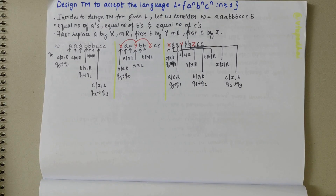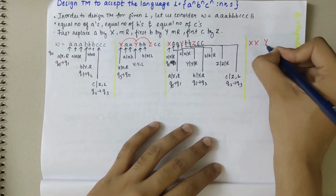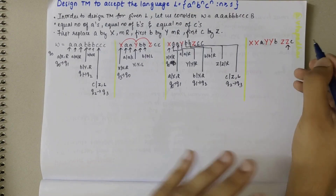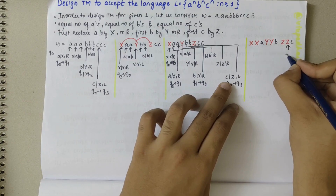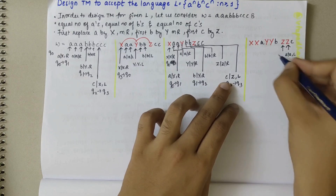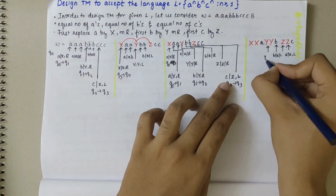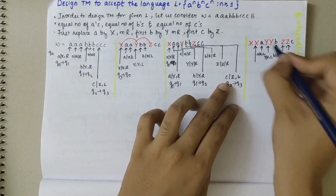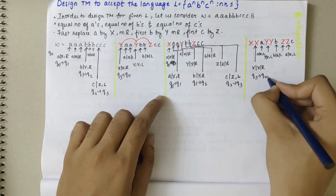We have now obtained the second X, Y, and Z matched. The tape shows XX, YY, ZZ followed by remaining A, B, C. Moving left from here: Z by Z and move left, B by B and move left, Y by Y and move left, A by A and move left. When we come to the second X, replace X by X and move right — transitioning from Q3 to Q0.